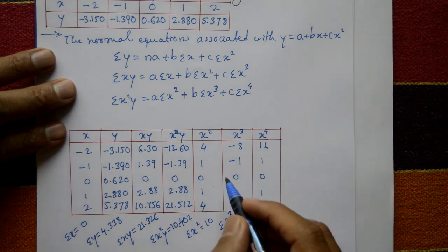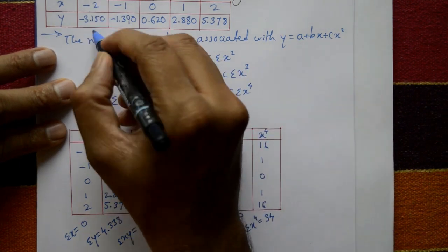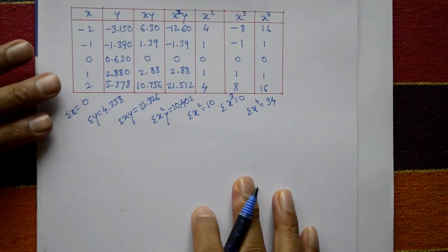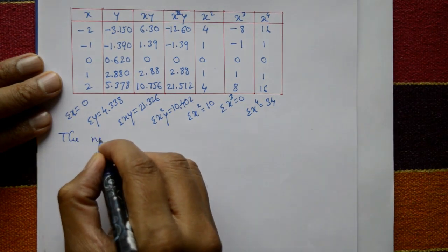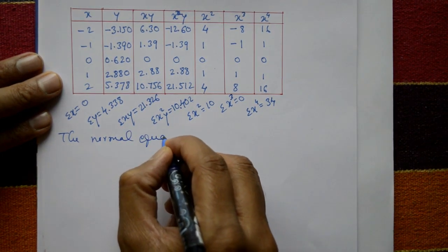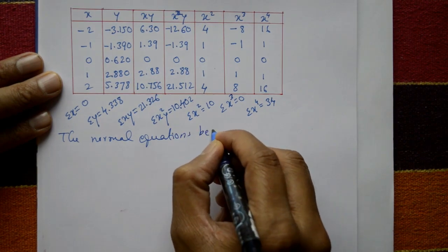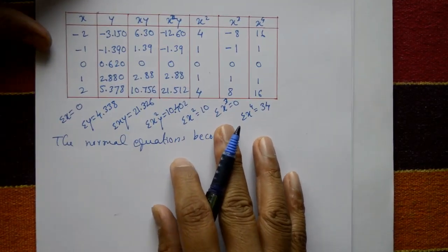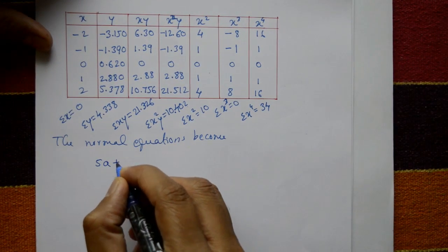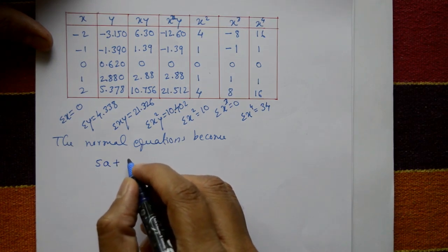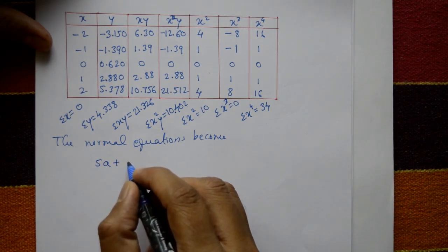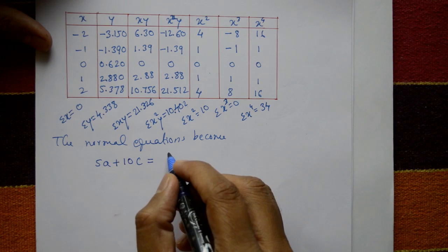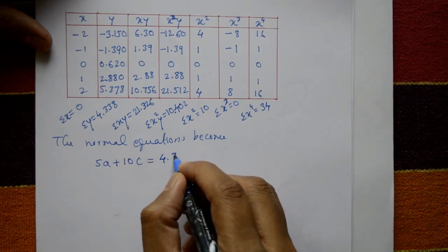Substituting these values into the normal equations where n = 5, the first equation becomes: 5a + 0·b + 10c = 4.338, since Σx = 0 and Σx² = 10.